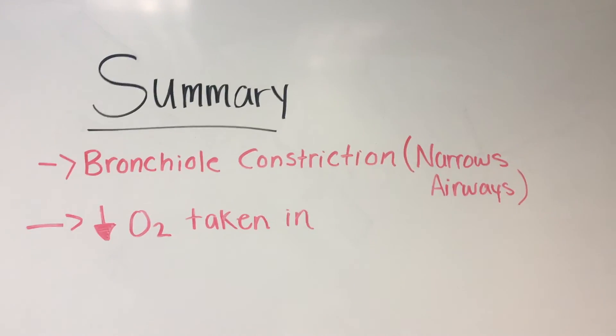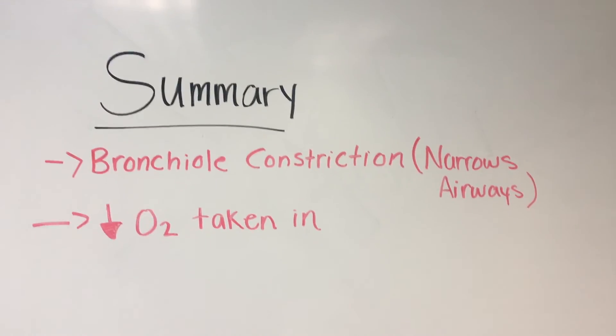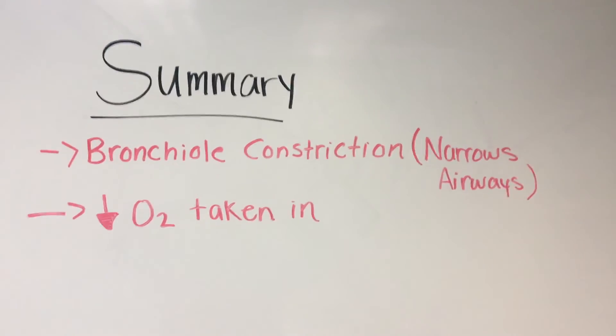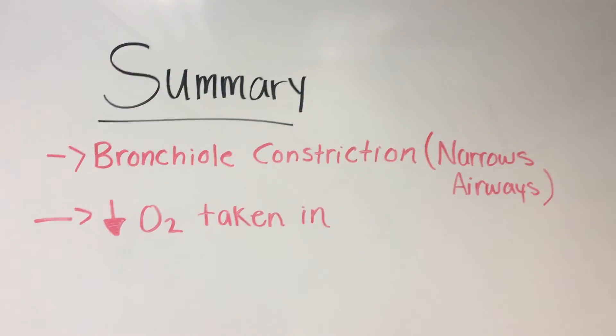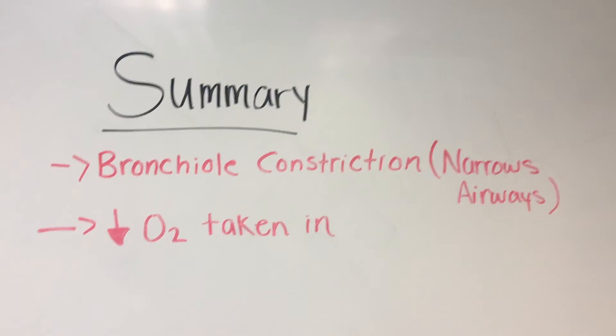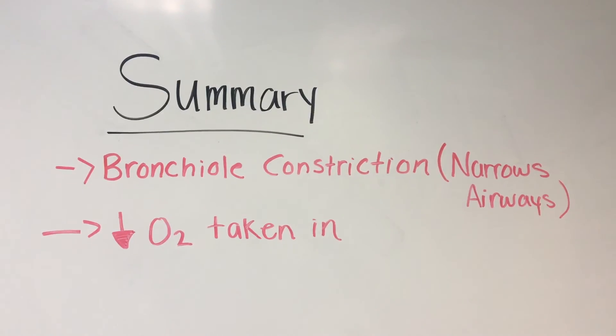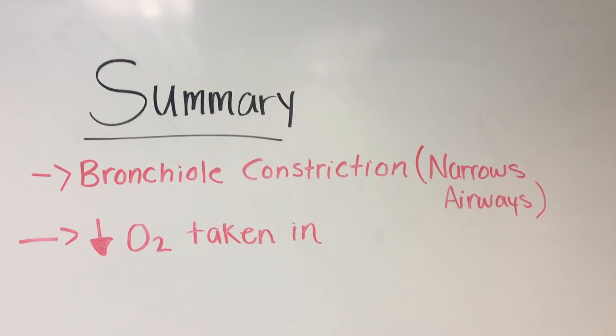In summary, asthma causes bronchial constriction and narrowing of the airways, and decreases the amount of oxygen taken in.